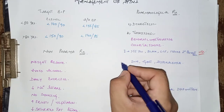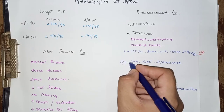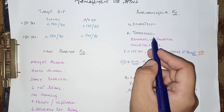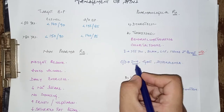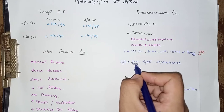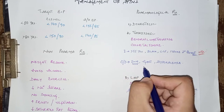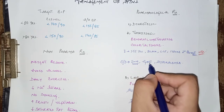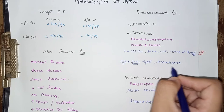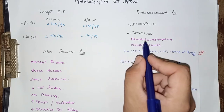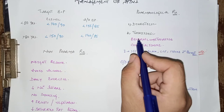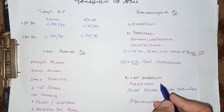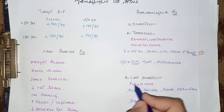The contraindications for thiazide diuretics: they should be cautiously used in patients with diabetes mellitus, as these drugs cause hyperglycemia. They should also be used cautiously in patients with gout arthritis, as these drugs also cause hyperuricemia, and in patients with hypokalemia, because thiazide diuretics are potassium-losing and can further exaggerate hypokalemia.